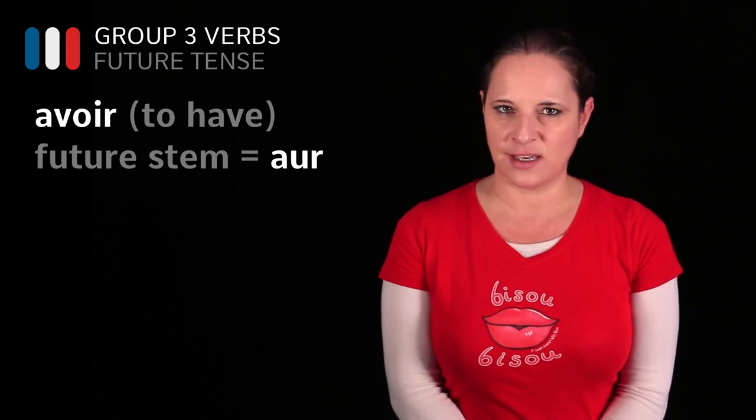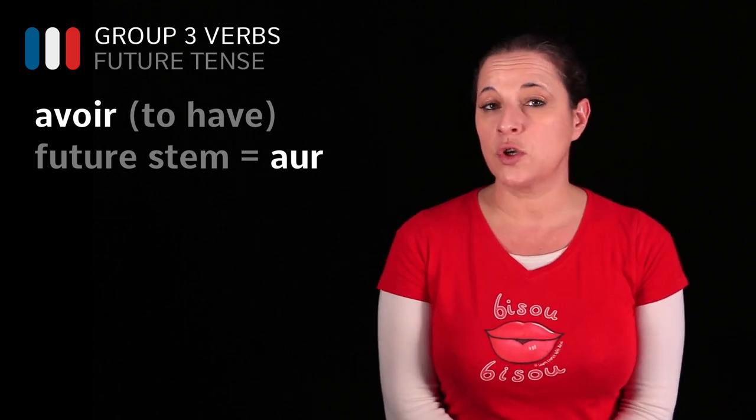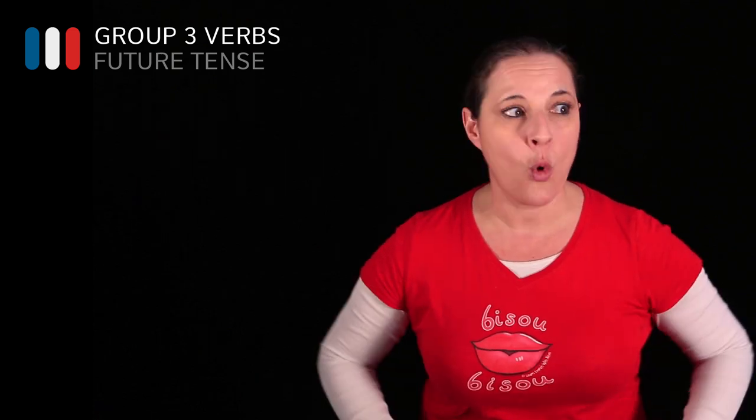So in order to help you, I'm going to do two things here. I'm going to show you what the endings of the future tense are, because remember they're always the same. And then I will draw a list of irregular verbs for you to learn, so you can see what the stem of that verb is when conjugated in the future tense. When you conjugate a verb in the future tense, the endings always remain the same.